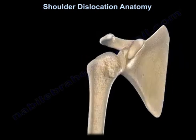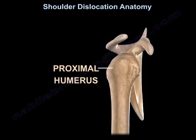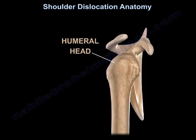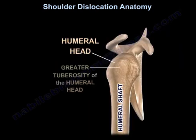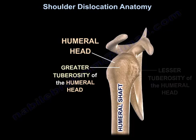Here is the proximal humerus. You can see the head, the shaft, the greater tuberosity, and the lesser tuberosity.